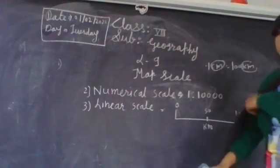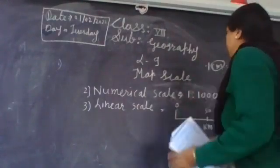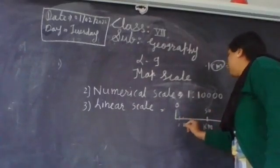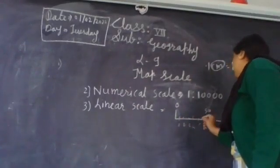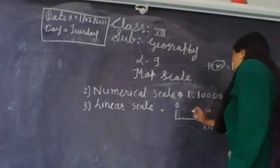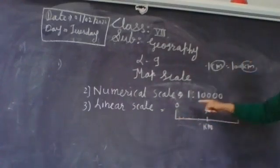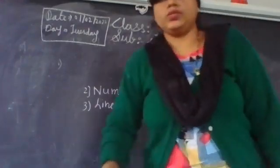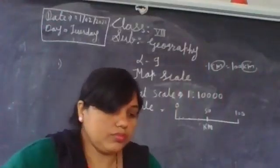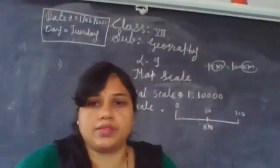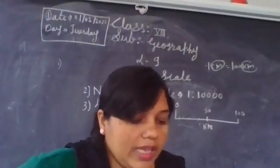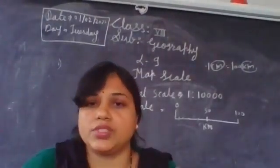Here, the linear scale has been shown — like 1, 2, 3, 4, 5, 6, up to 50 and beyond. The scale has been shown from 0 to 100 kilometers. The scale in which distances are expressed by drawing a graphical scale is called the linear scale.